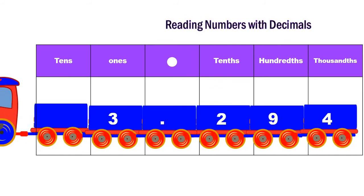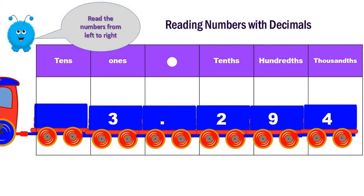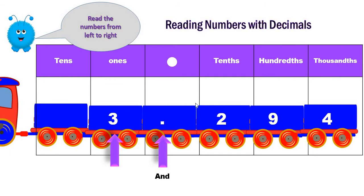Let's read this number. Remember, we read from left to right, so we start with the whole number, which is here — three. Yes! Then we say 'and,' because this is the decimal point. Now let's read the decimal part as one number.